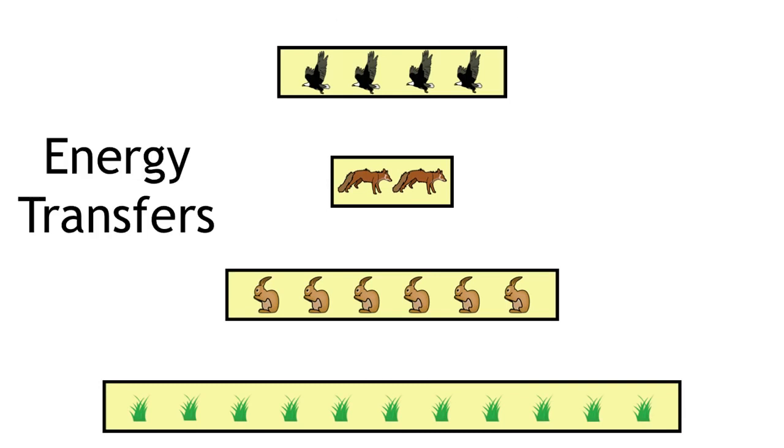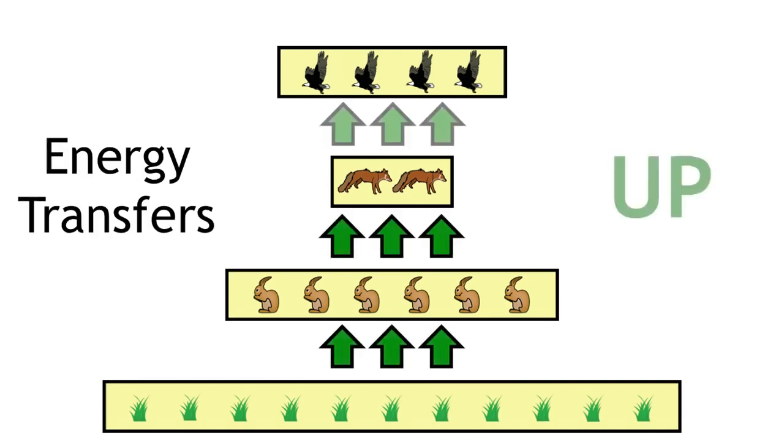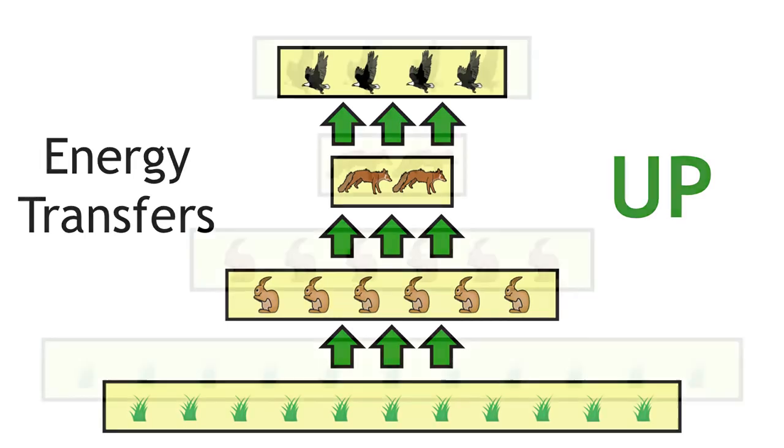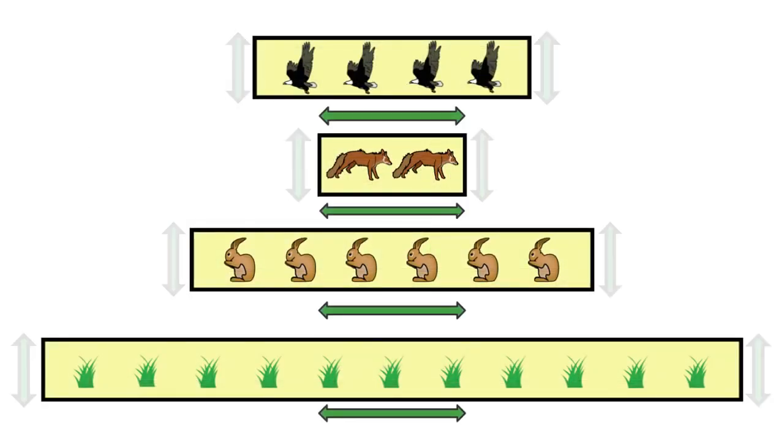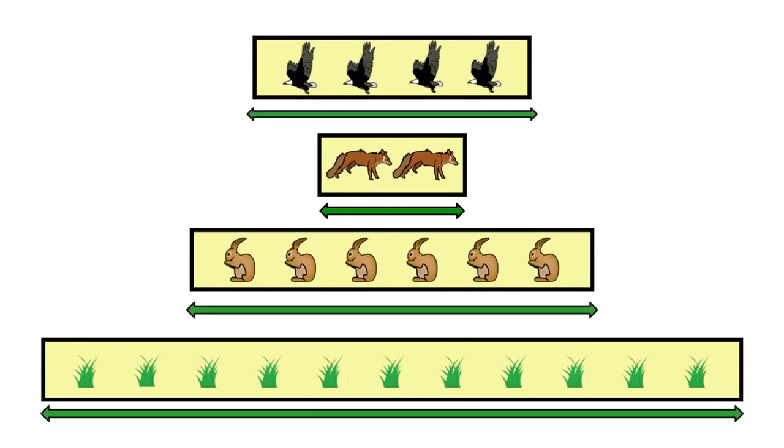In the ecosystem, the energy is being transferred up the pyramid, as each organism is consumed by the organism in the next trophic level up. The height of the bars should be the same, but the width of the bars should be proportional to the quantity that's being displayed.